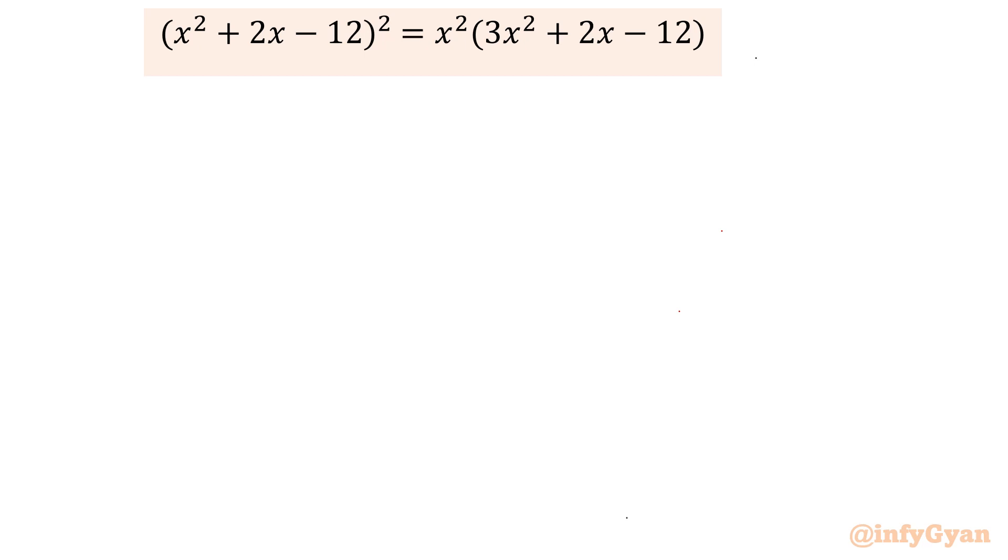If you observe this equation, then 2x minus 12 we have on both sides, LHS and RHS. So I am going to give substitution to this term. Let me write, let 2x minus 12 equal to t. So our equation will convert into x square plus t whole square, and RHS would be x square times 3x square plus t.